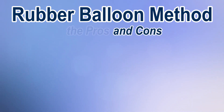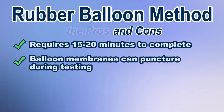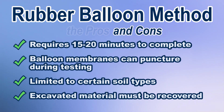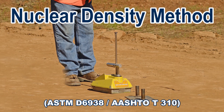The cons are that the rubber balloon test method requires 15 to 20 minutes to complete. Balloon membranes can puncture during testing of soils with appreciable amounts of rock or coarse material. It is generally limited to soils in an unsaturated condition and is not recommended for soils that are soft or that deform easily. And all excavated material must be carefully recovered for accurate testing.